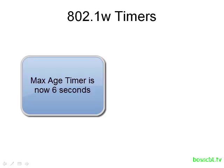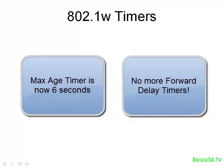The second change in timers has to do with the forward delay timers. We don't reduce them — in fact, we completely get rid of them. In Rapid Spanning Tree, there is no forward delay timer. That timer is 15 seconds, and we usually came across it two times: once with the learning state and once with the listening state. So in total, we've shaved off another 30 seconds of convergence time. Combined, you can see we're already making some drastic improvements.